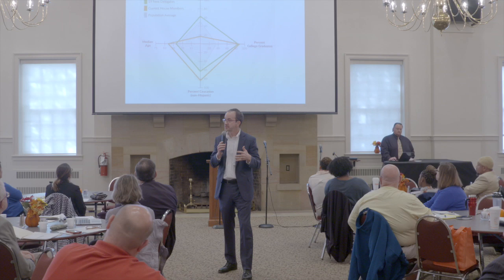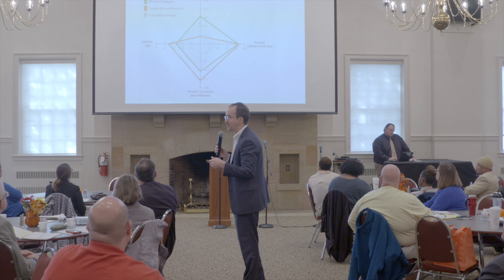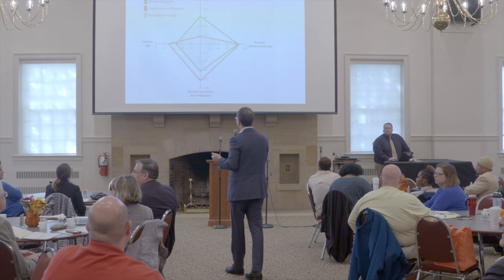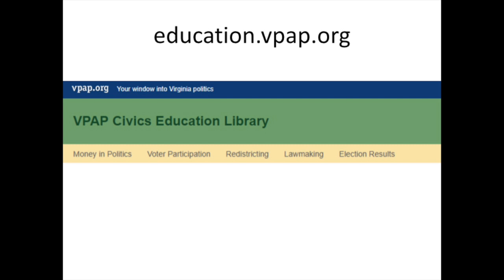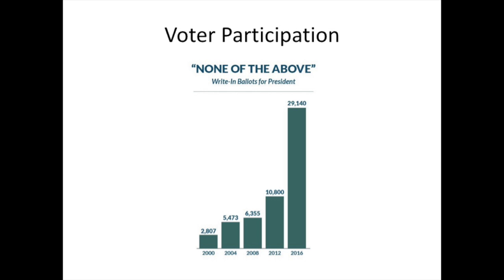I see one of our new delegates over here — Delegate Turpin, just noticed you. You're part of this change in the new 19 House Delegates. These are all images you can find in the library. So really getting students to understand this idea that elections are decided by those who show up — if you don't show up and give your opinion, somebody else is making the decision for you. We have this on a video, which might be helpful.